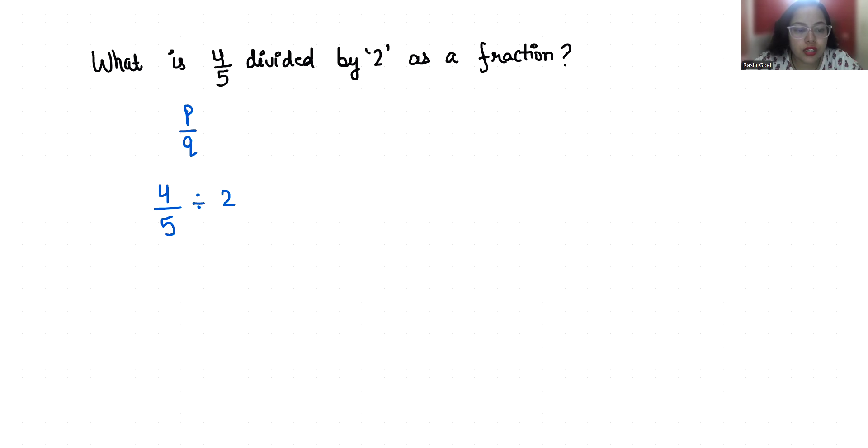So when we remove this divided sign we can write multiply and do the reciprocal of right hand side number. So it becomes 1 by 2.